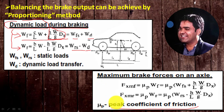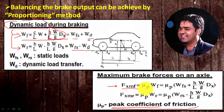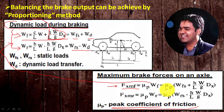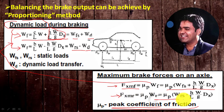The peak coefficient of friction is helpful to achieve the maximum braking force on each axle. The maximum braking force at the front, F_xmf, equals mu_p multiplied by W_f, where W_f is the load on the front axle. Substituting the value of W_f, we get the maximum braking force for the front axle in terms of deceleration. Likewise, we can calculate the maximum braking force at the rear axle by substituting the rear axle load, also expressed in terms of deceleration.